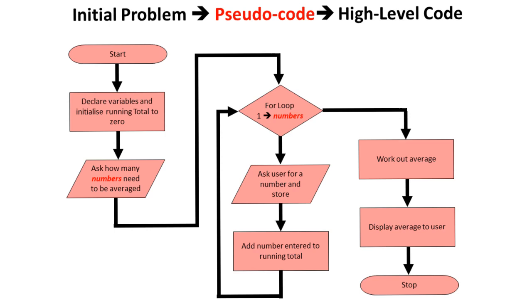So I've started off by writing my problem out as a flow diagram, because I always find that easier, and so do my students, before producing the actual pseudocode. So here's my flow diagram. Declare some variables and initialize a running total to zero, then ask how many numbers they want to average.